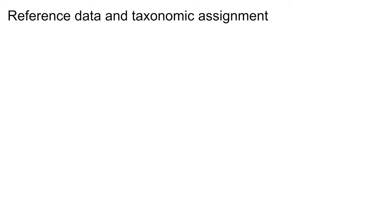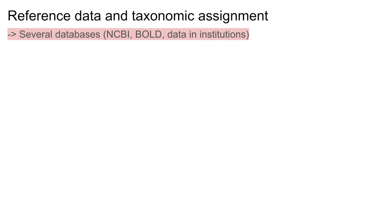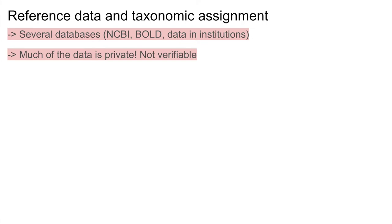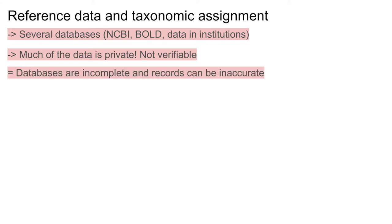The last challenge on the bioinformatics side is doing the taxonomic assignment — figuring out the species behind all the sequences we obtain with metabarcoding. The challenge here is that there are several reference databases. NCBI and BOLD are really popular ones, but a lot of data is still sitting at institutions, and a lot of data is also still private. Even data on BOLD can be private and can't be verified. So if there are gaps or inaccurate records in the reference database, it's very difficult to resolve these issues because so much data is not available or the metadata with the reference data is not available. It becomes hard to figure out what is really going on with records that might indicate a misidentified species, for example.